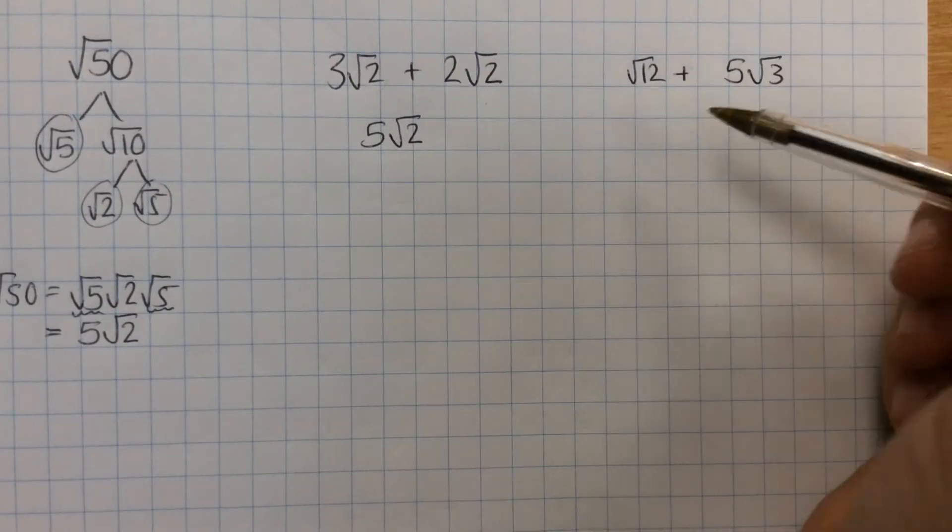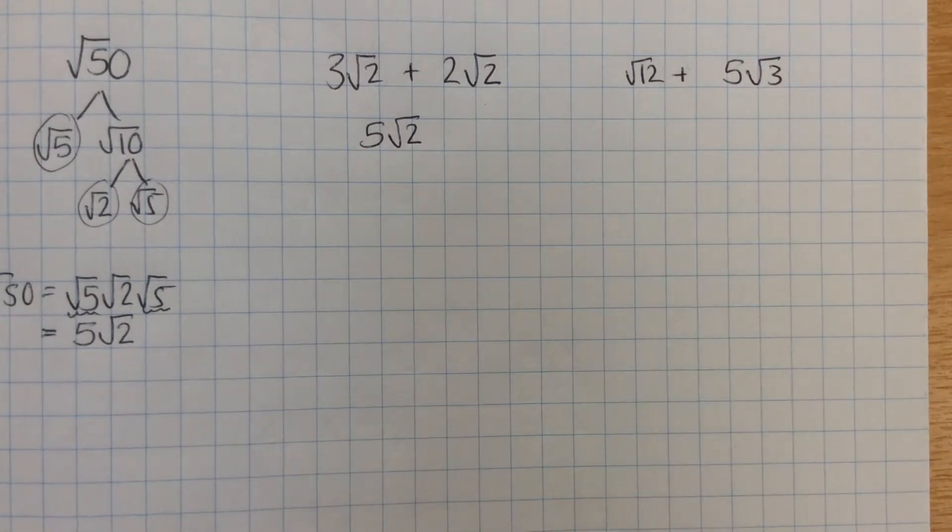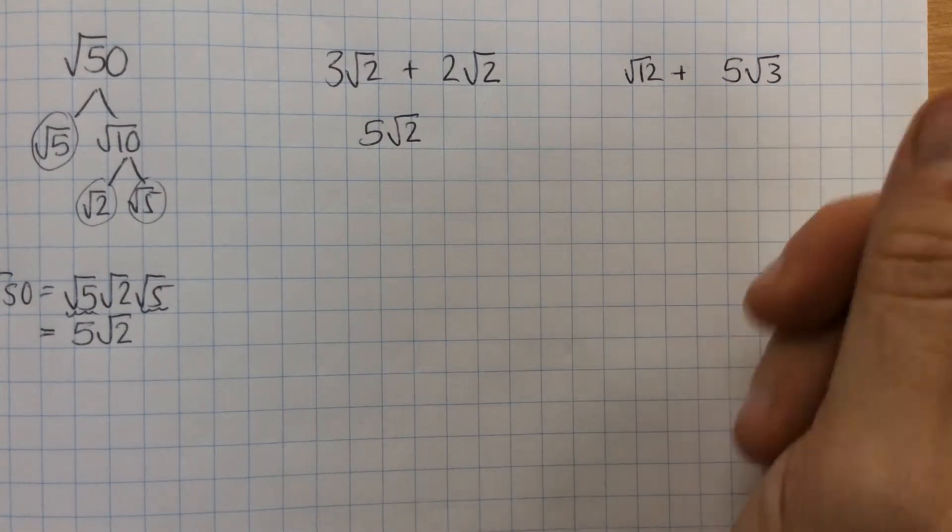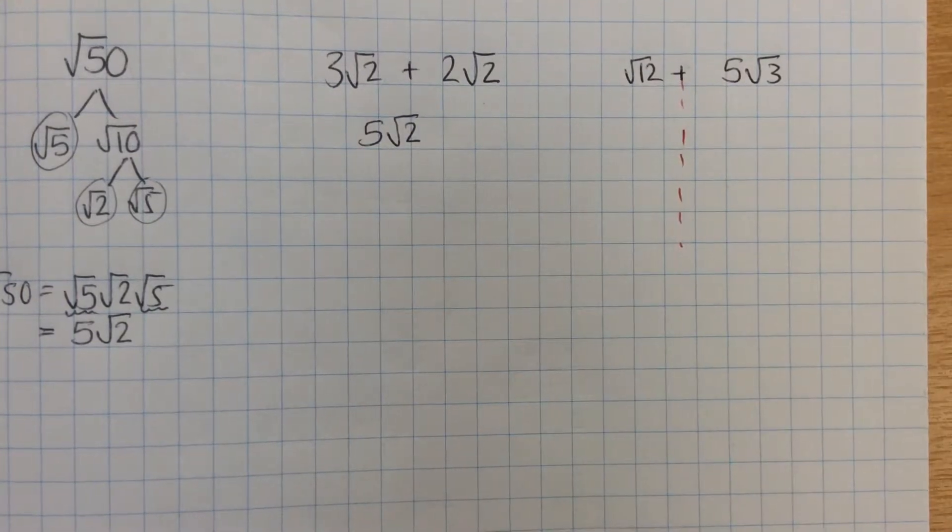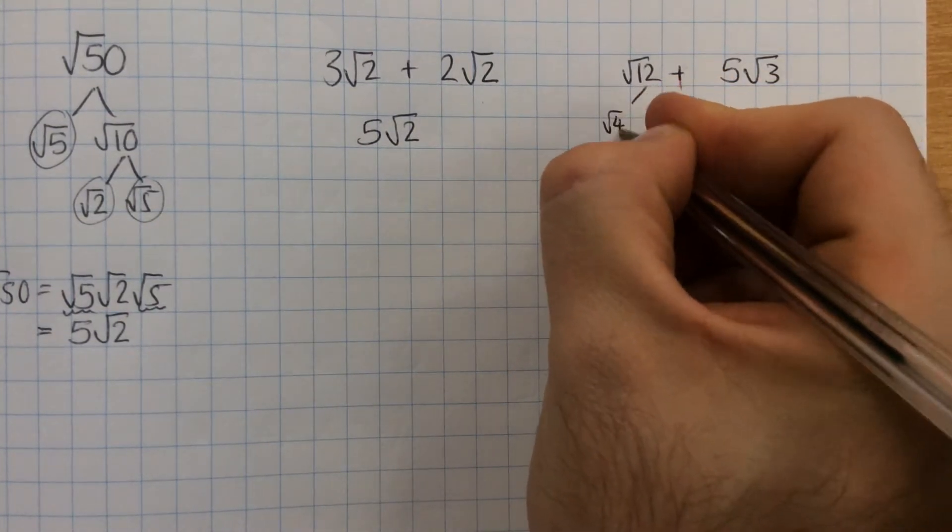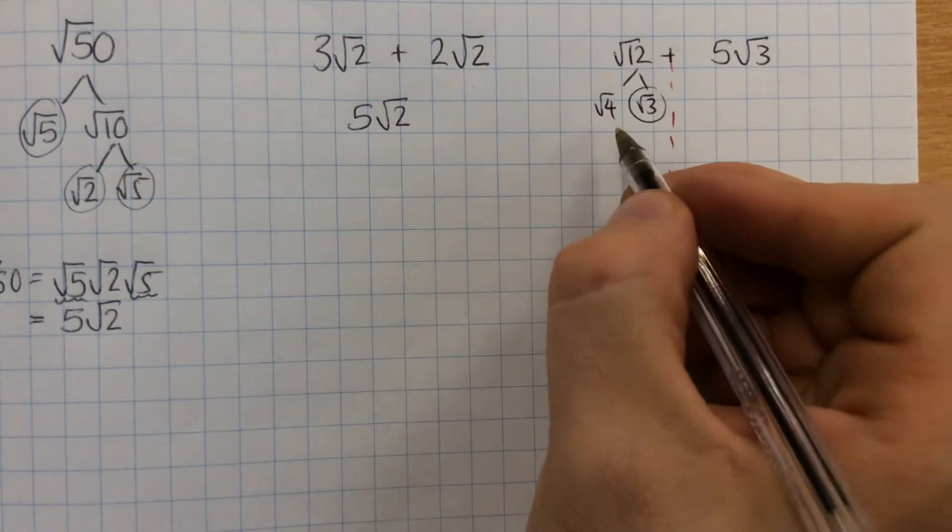Next one, if you have roots added that have different numbers inside the root, we can't add them together straight away. We need to simplify any of them that can be simplified. So in this case, we can simplify root 12. So root 12 is root 4 times root 3. We can circle root 3.